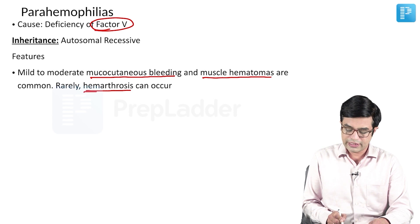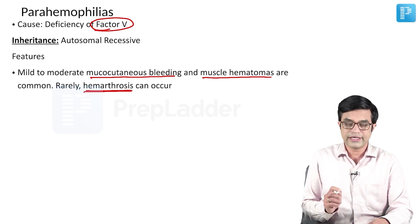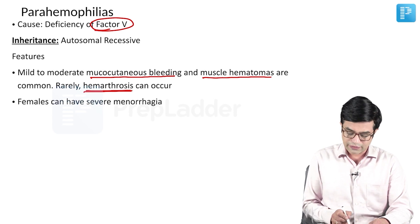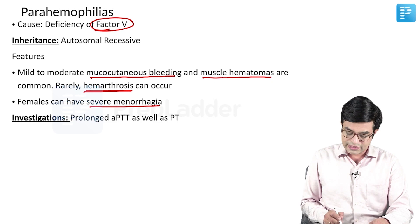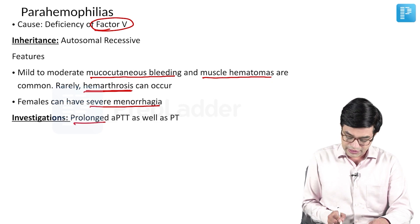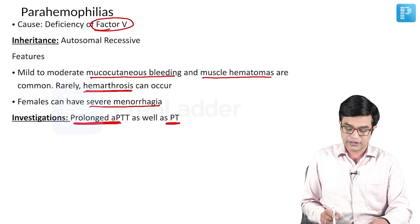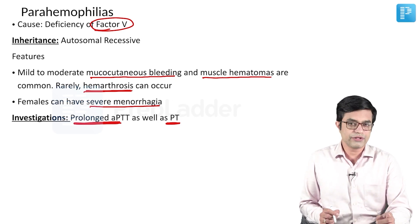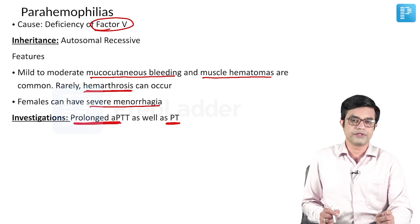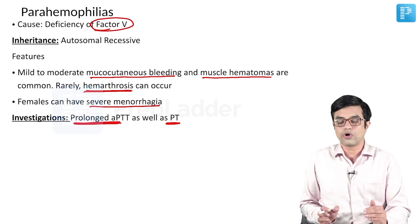Rarely, you can find haemarthrosis. In addition, females can have severe menorrhagia. Investigations show prolonged APTT as well as prolonged PT because factor V, as shown in the diagram from the previous module, lies in the common pathway.